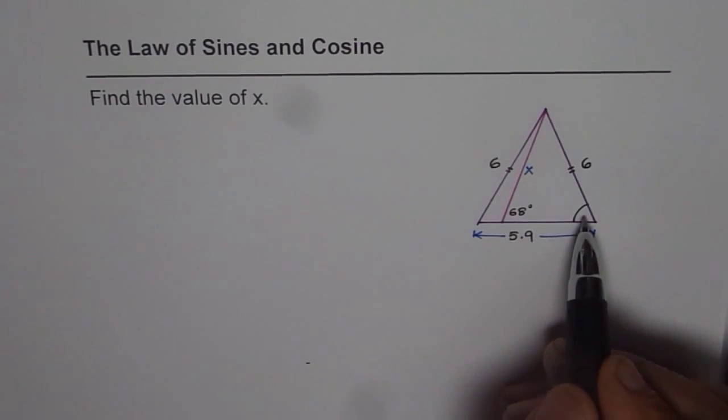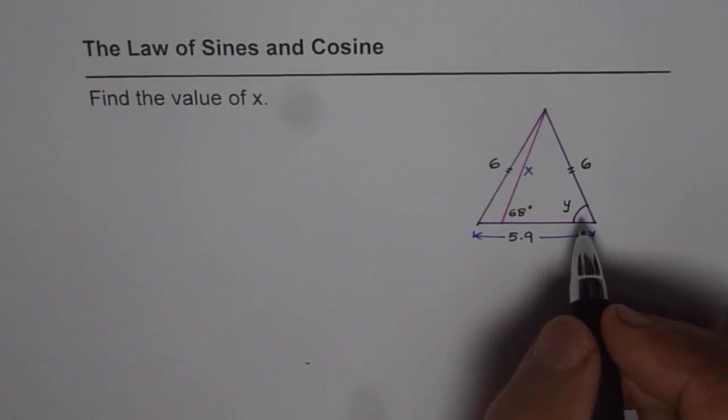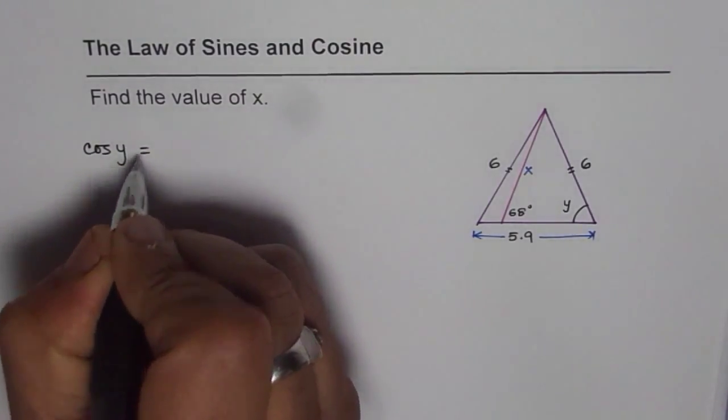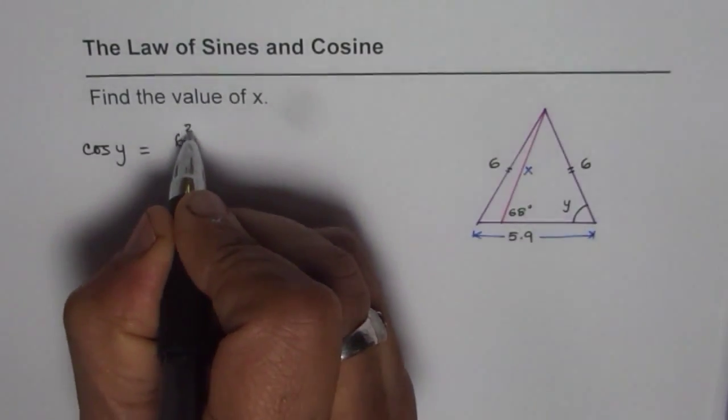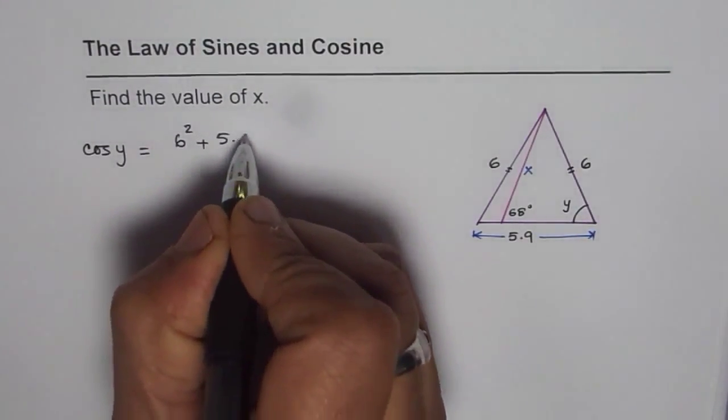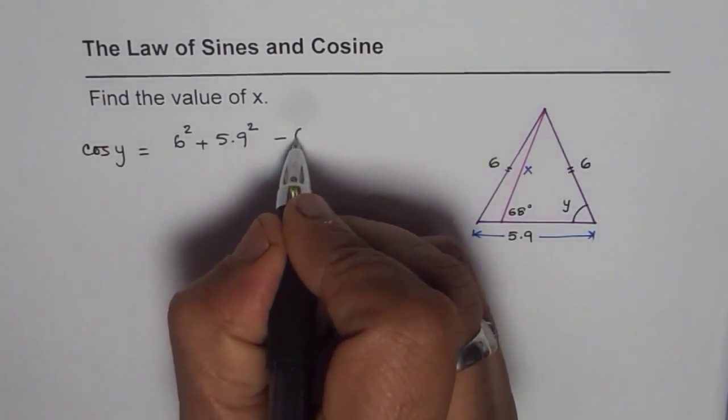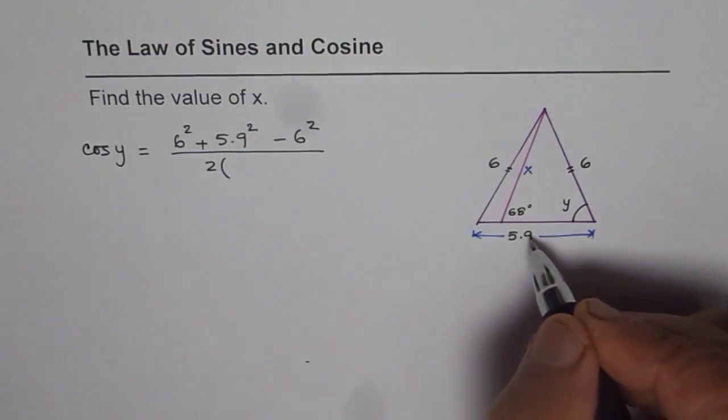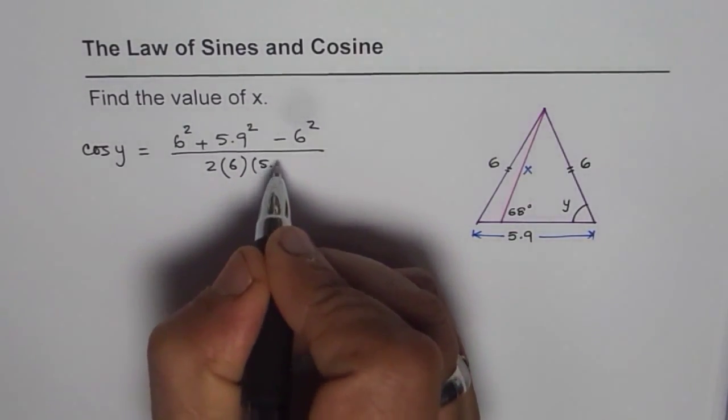Now, let us apply the cosine law and find what this angle is. Let me call this angle as y. So this angle y, we can write cos y equals 6 squared plus 5.9 squared minus the opposite side squared, divided by 2 times 6 times 5.9.